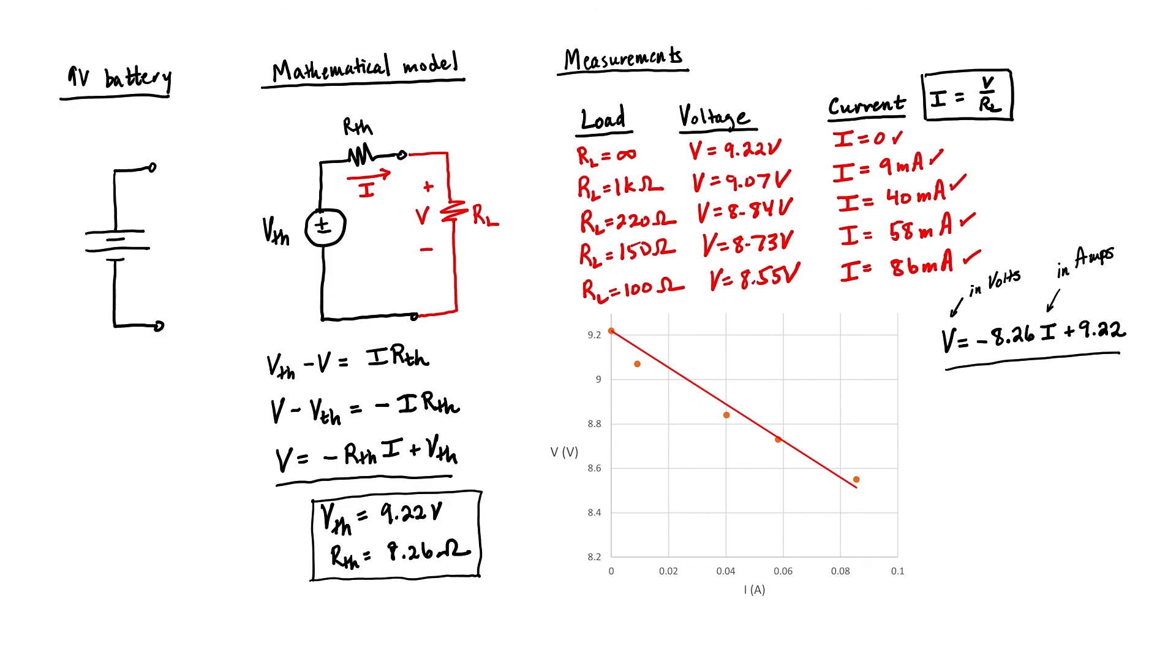We can make a plot of the voltage versus current for any source, and as long as that plot works out to be relatively linear, then we can use the Thevenin equivalent source and resistance to create a mathematical model for that source, just like we did with the 9 volt battery right here.